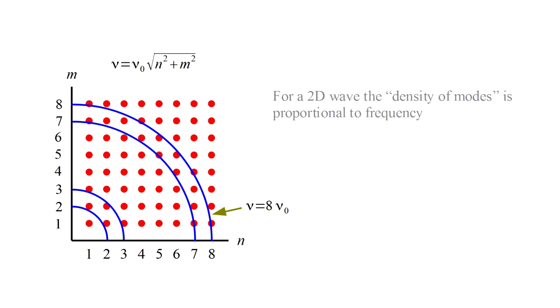For two-dimensional waves, the density of modes is proportional to frequency, and we write rho of nu equals A times nu.